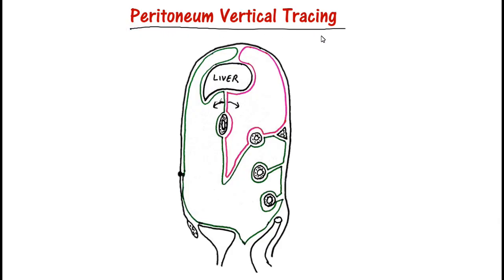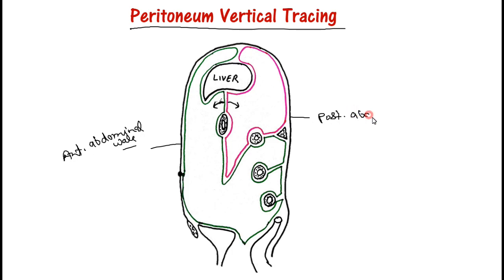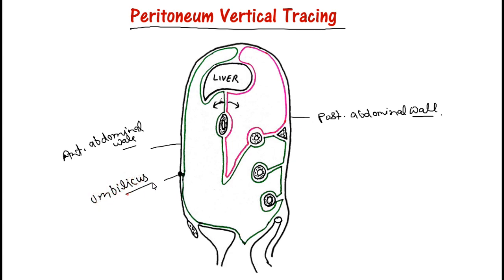Today we will see the peritoneal tracing. First is the vertical tracing. On the anterior side we have the anterior abdominal wall, posterior side is the posterior abdominal wall, and this is the umbilicus. We will start from here.